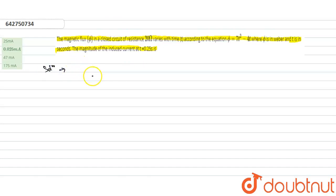We know the formula for induced emf: i is equal to e by r, and we know that e is equal to minus d phi by dt.